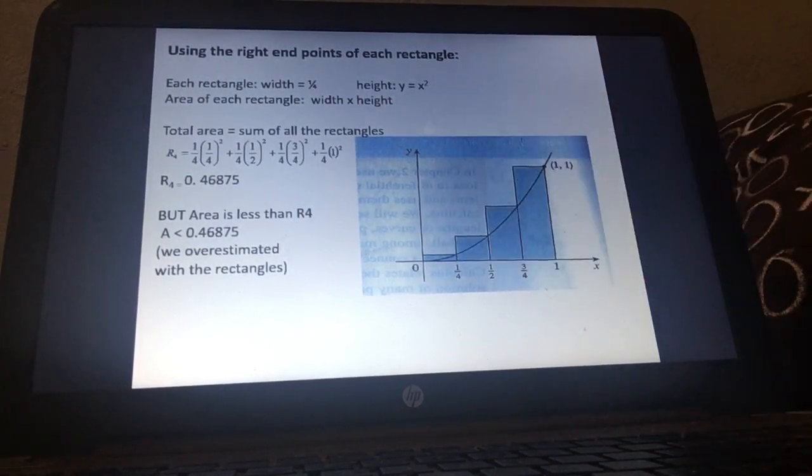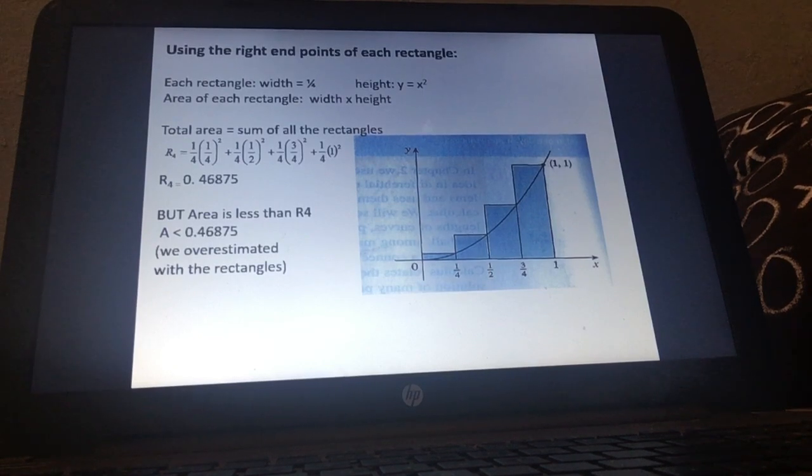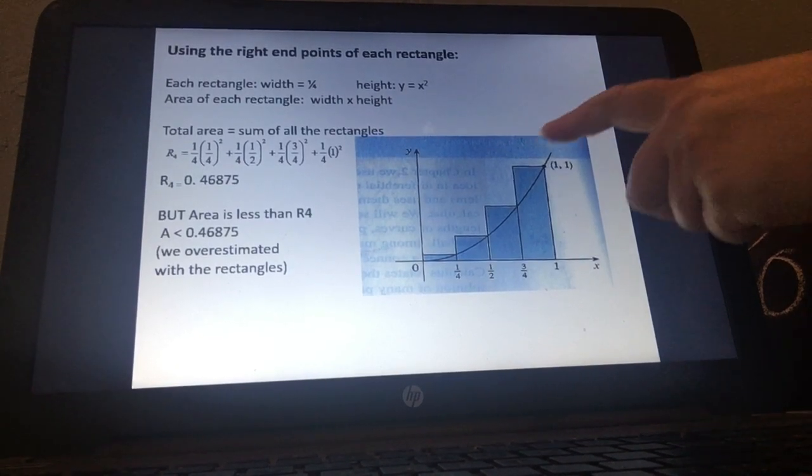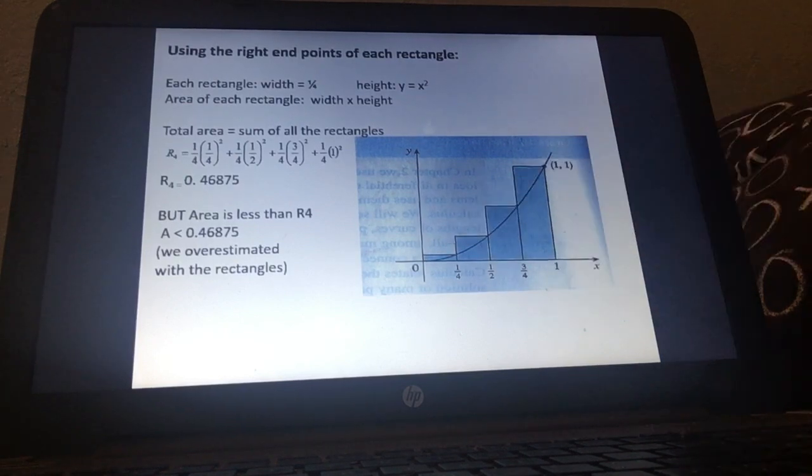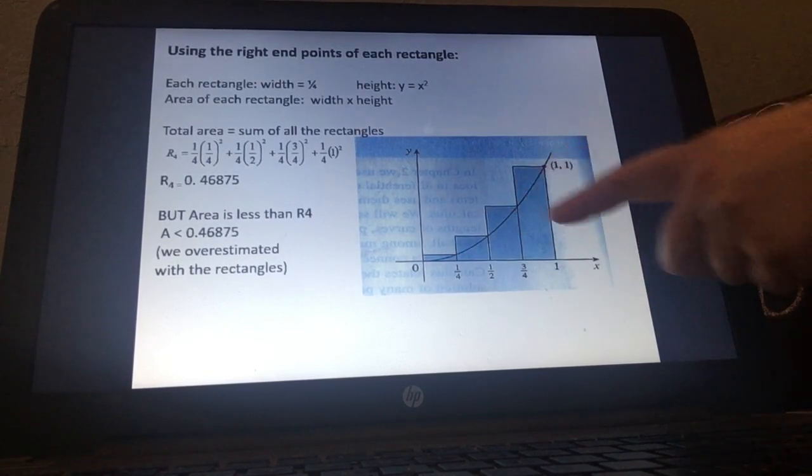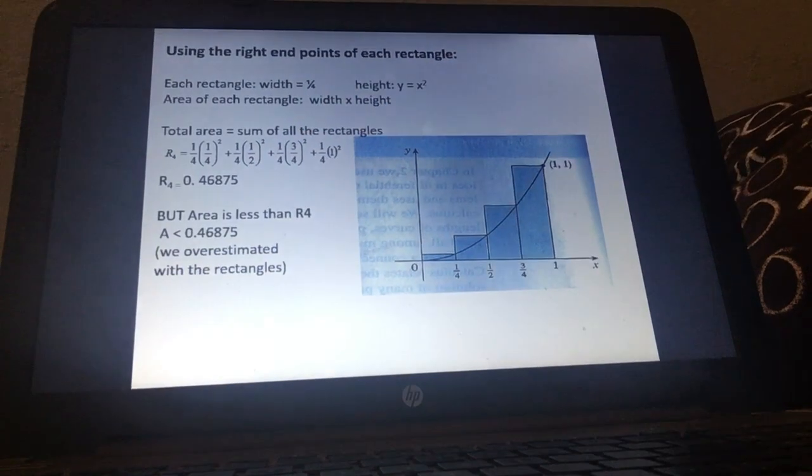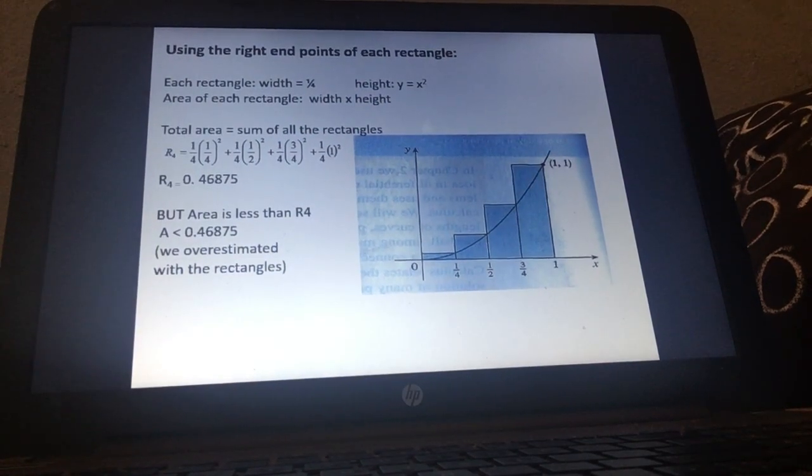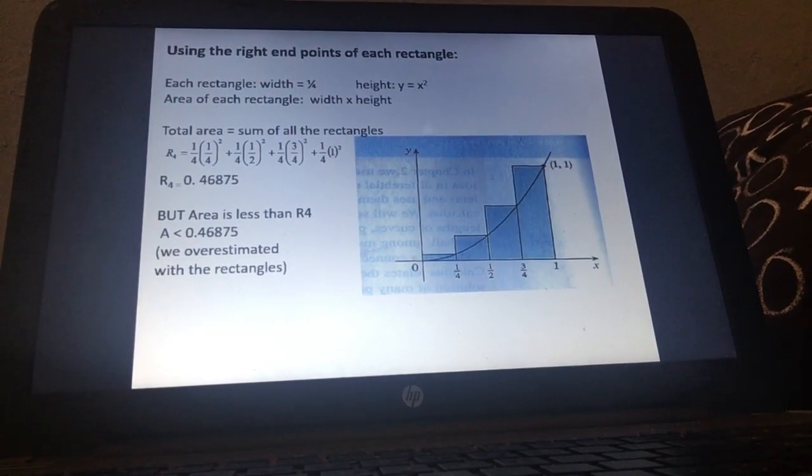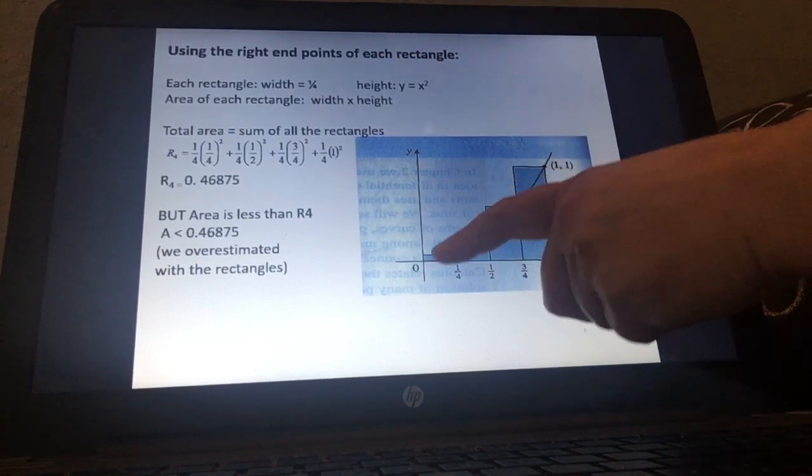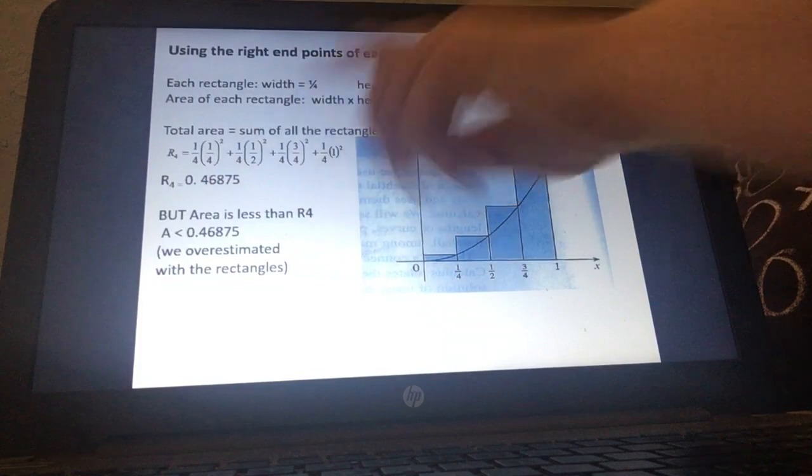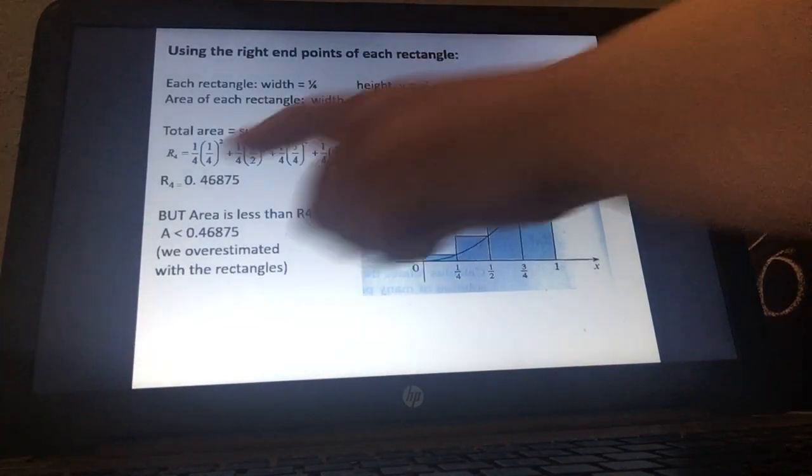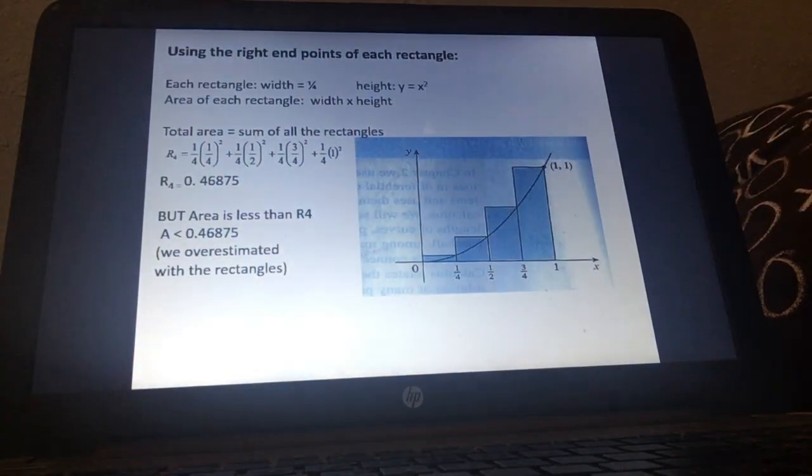So that's the area using that method. But I'm sure you see there's a flaw in that method because I've overestimated right? Look at this little piece. There's a lot of pieces above the curve and we just want the area under the curve. So that area of 0.46875 it's an approximation but we know we've over approximated. The actual area is less because look at all these extra pieces above. So that gave me an estimation of it and I know that the real area would be less than that because we've overestimated by using the right-hand point.